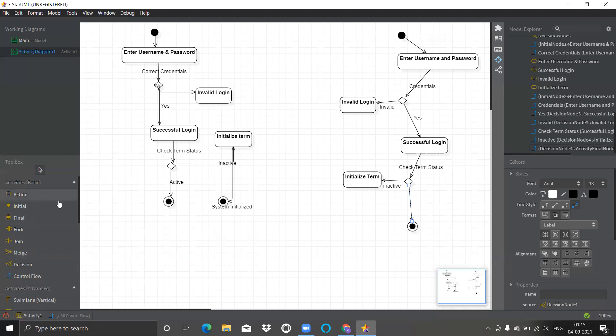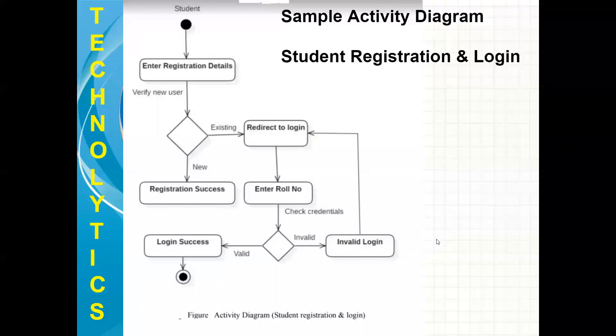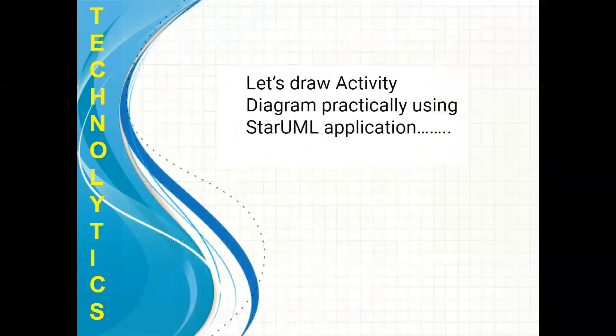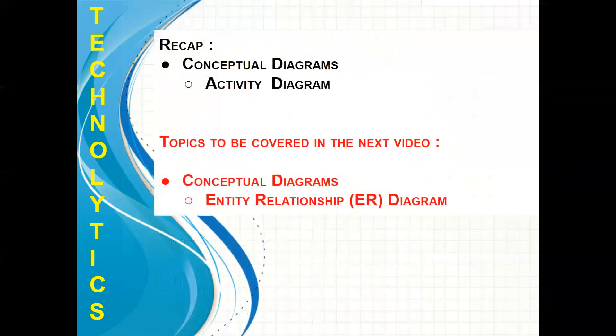All these activities as and when you require you can make use of it. That is what I wanted to show you in this video. That is activity diagram. And let's recap. We have seen the definition of activity diagram. The symbols used in activity diagram. Two samples I have shown you. And practically also I have shown you how to draw an activity diagram in Star UML.